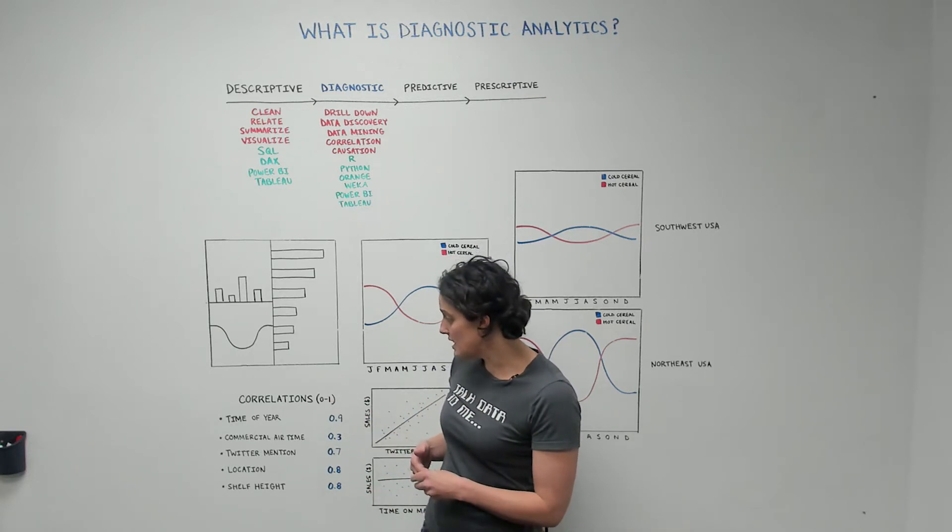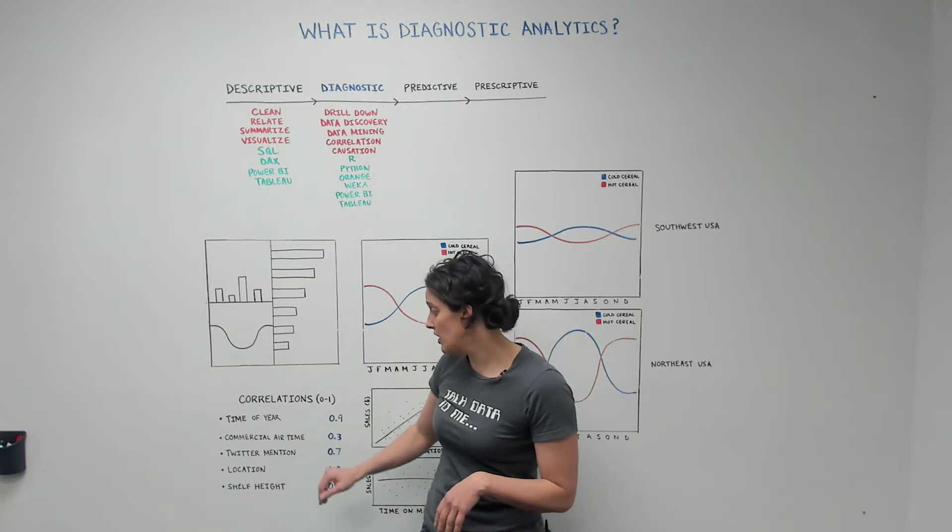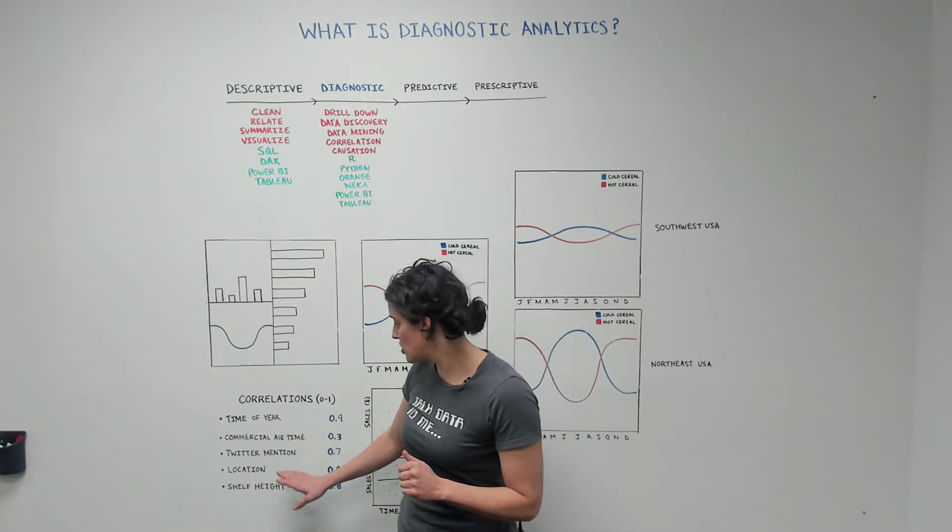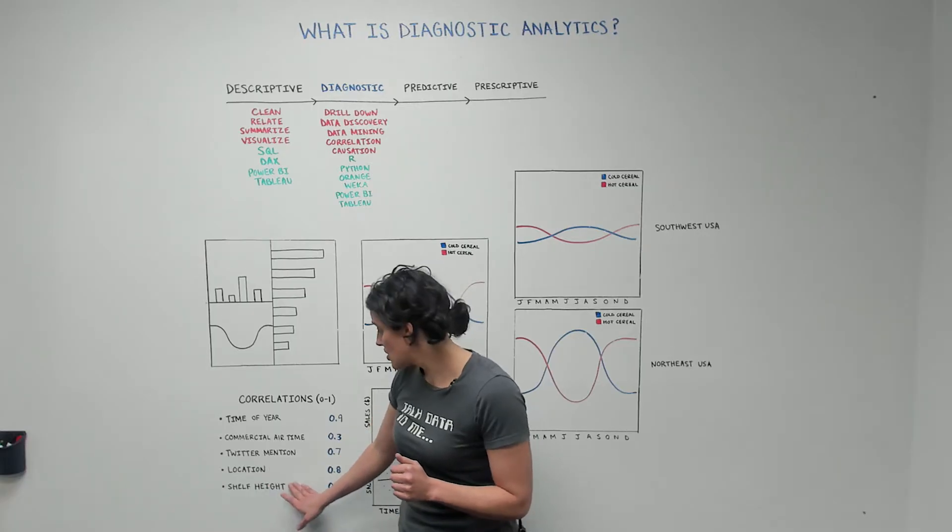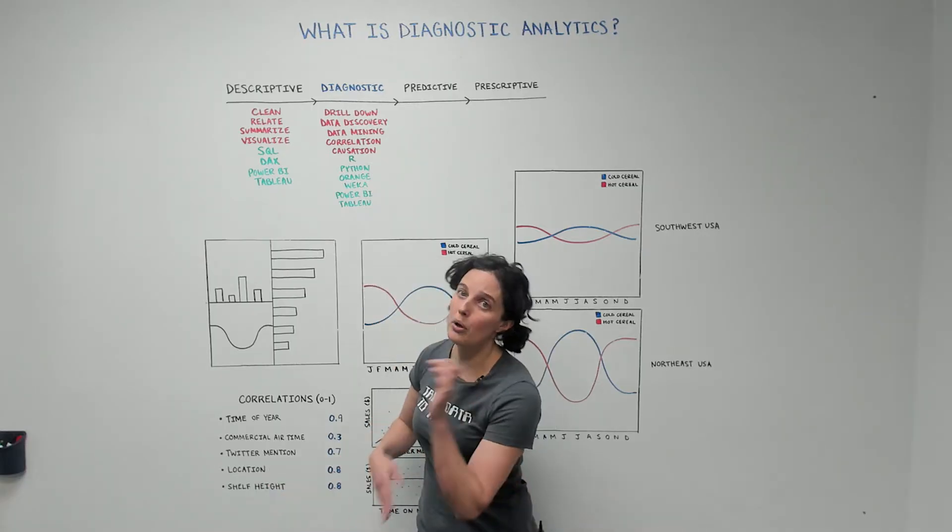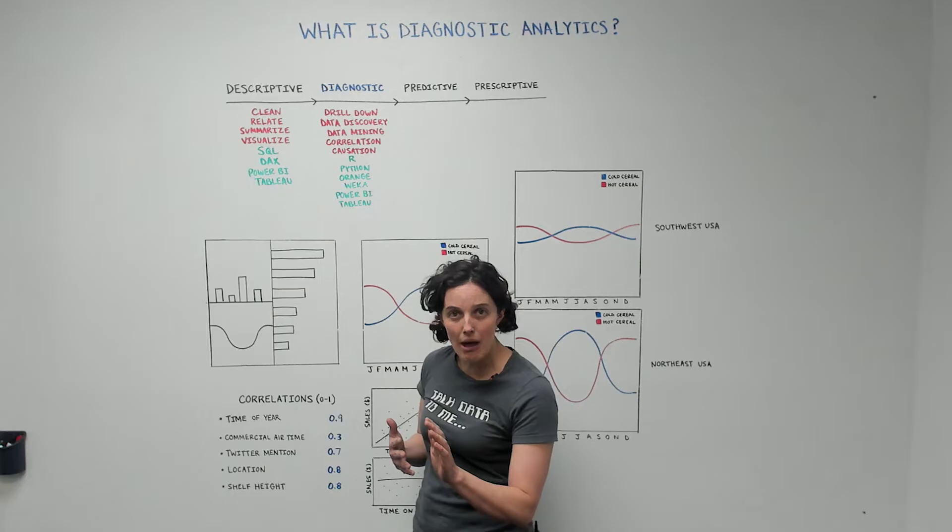In this example, we're going to take time of year, commercial airtime, Twitter mentions, location, shelf height, and then we're going to put it in our big box of statistical methods.